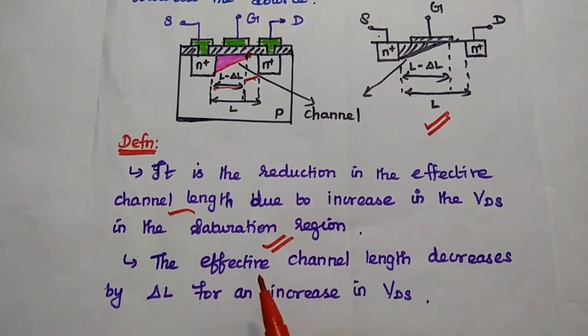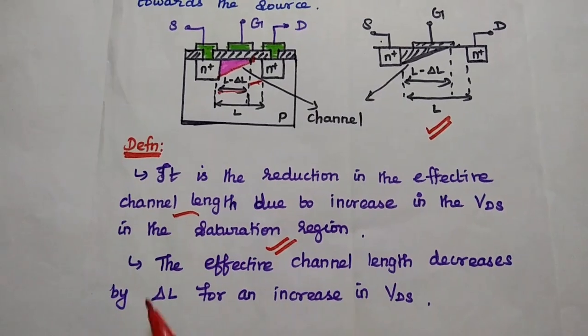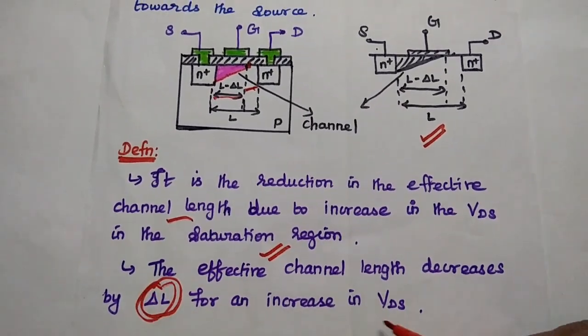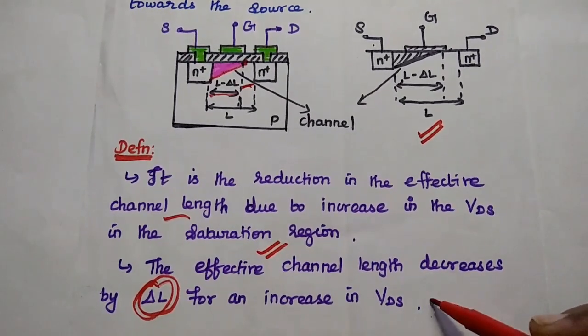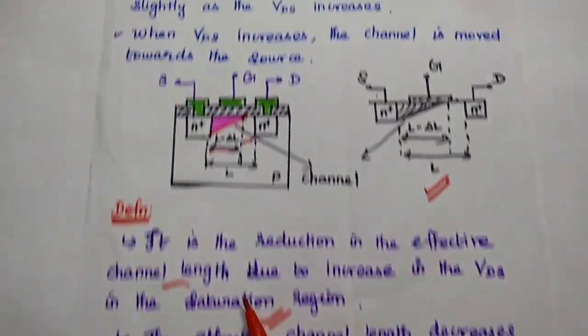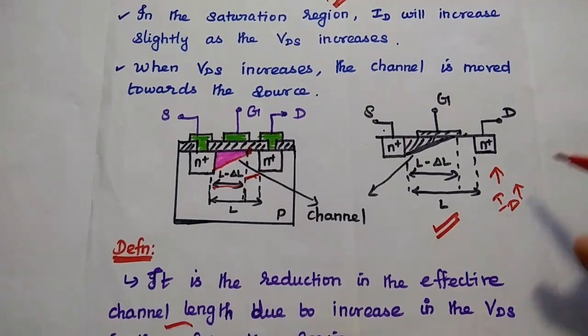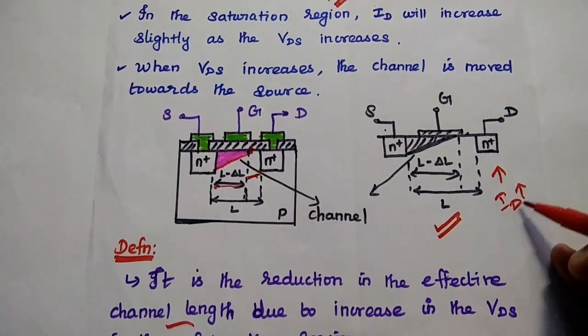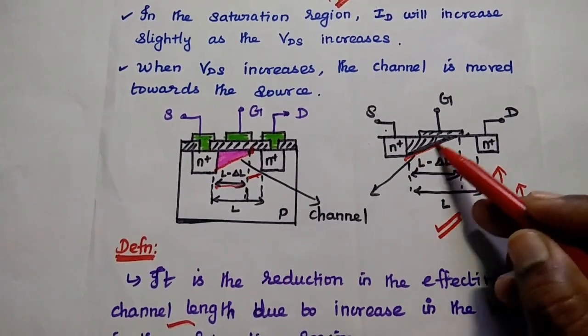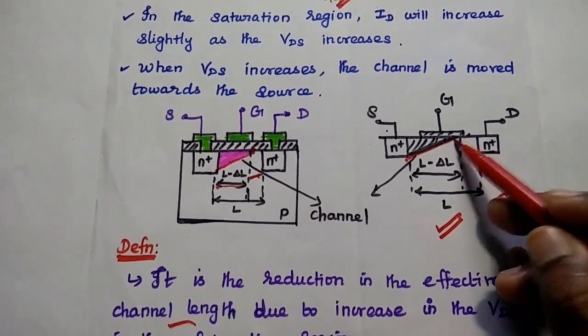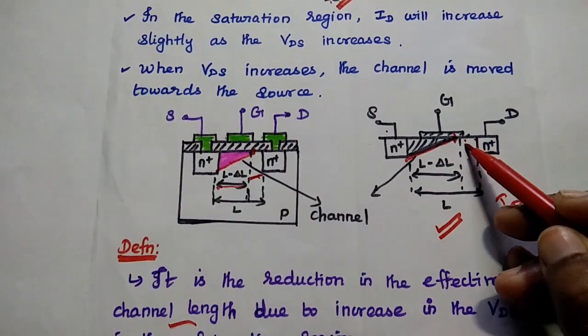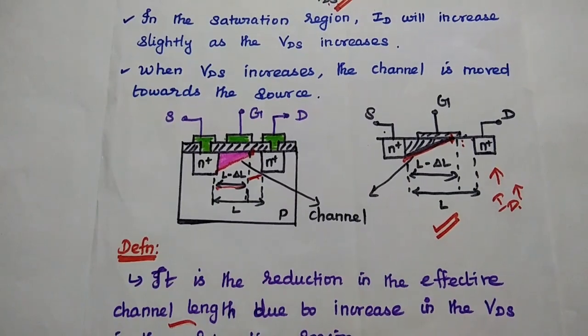The effective channel length decreases by del L for the increase in VDS. This causes a slight increase in ID. That is called channel length modulation.